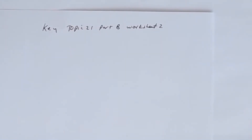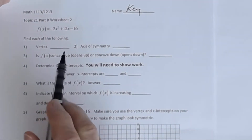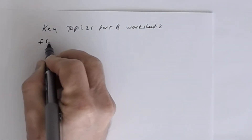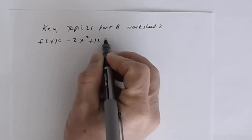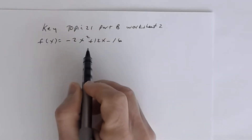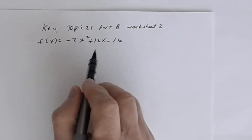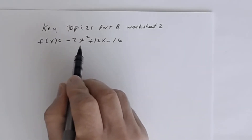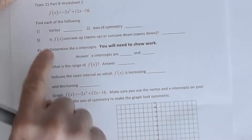This is Key to Topic 21, Part B, Worksheet 2. On this worksheet, you're given the quadratic function f(x) = -2x² + 12x - 16. Notice that this quadratic function is in general form, not vertex form, so you're going to have to use the vertex formula to find the vertex.